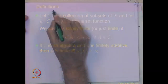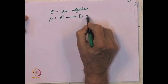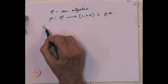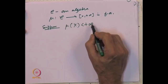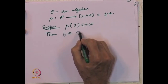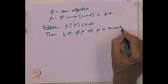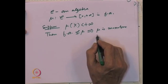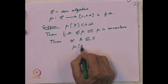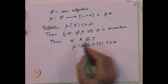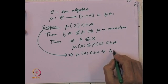Suppose C is an algebra and mu: C → [0, ∞) is finitely additive. Suppose mu(X) is finite. Note the whole space X belongs to C because C is an algebra. We had seen earlier that finite additivity of mu implies mu is monotone. Because mu is monotone, for every A ⊆ X, mu(A) ≤ mu(X), which is finite. Thus mu(A) is finite for every A subset of X.